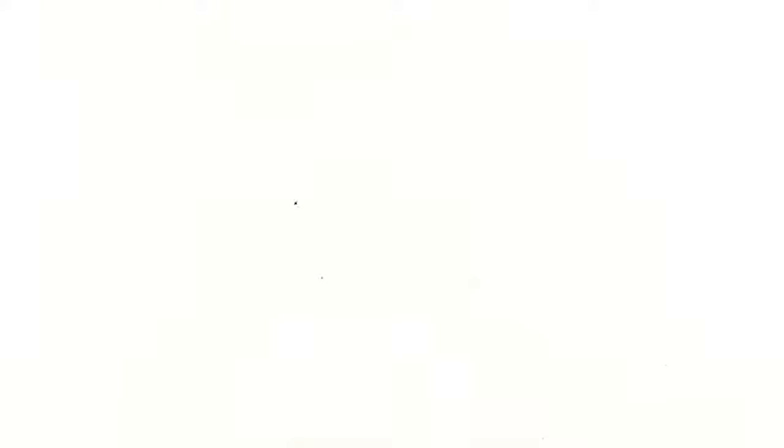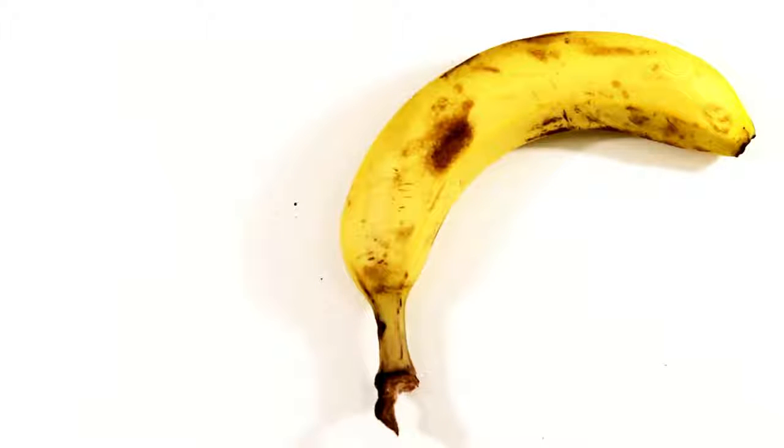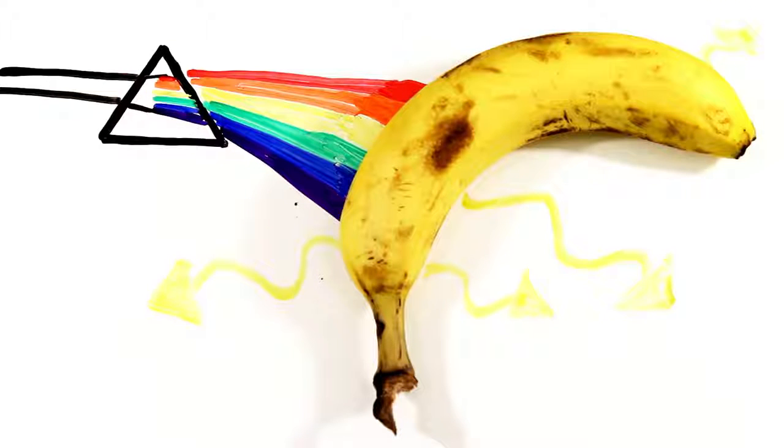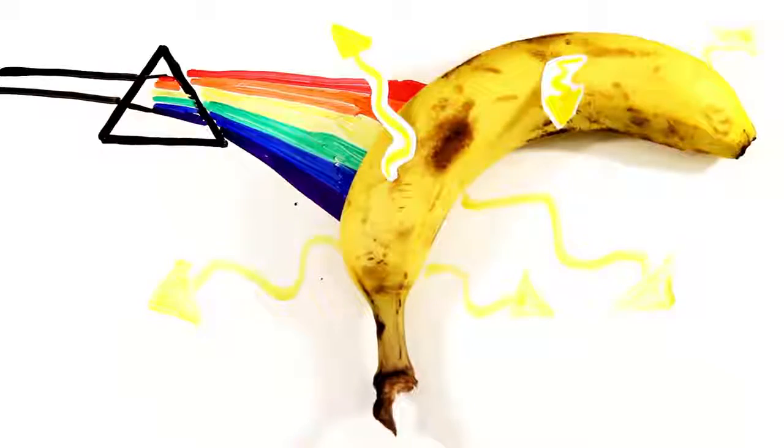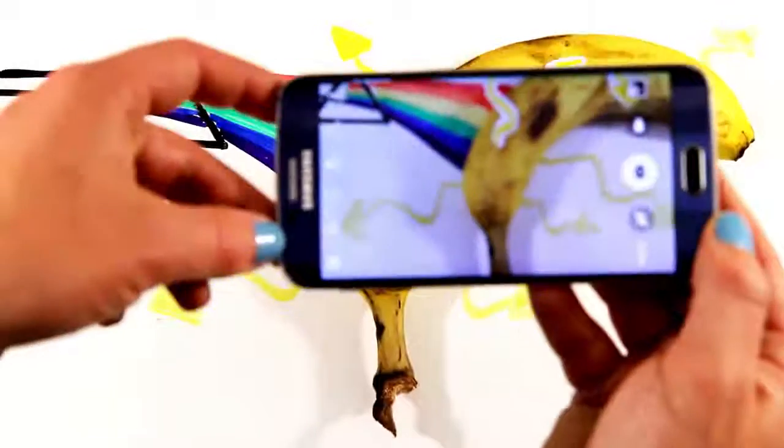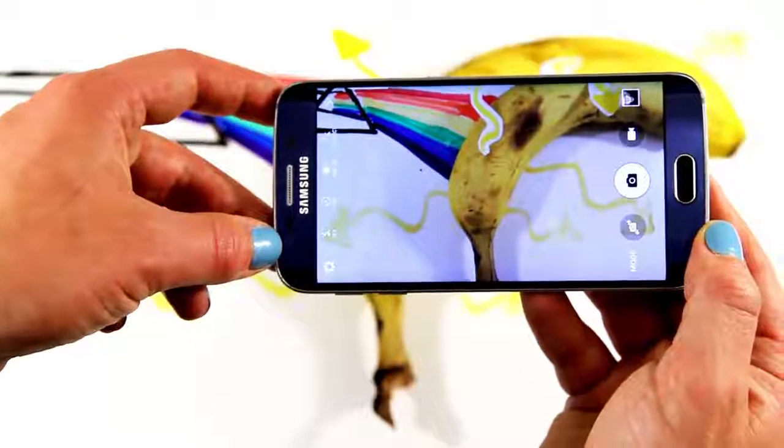For example, when you hold a yellow object in real life, it's actually absorbing every wavelength except yellow. That yellow light bounces back and hits your eyes. But when you look at this yellow object through your screen right now, it's actually not yellow at all.